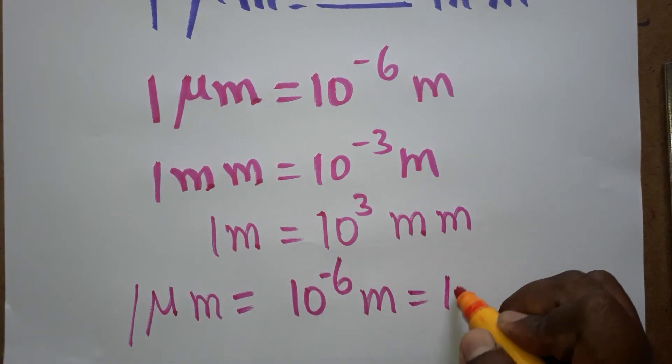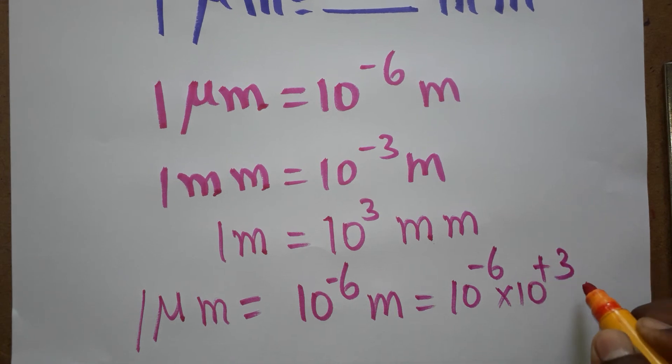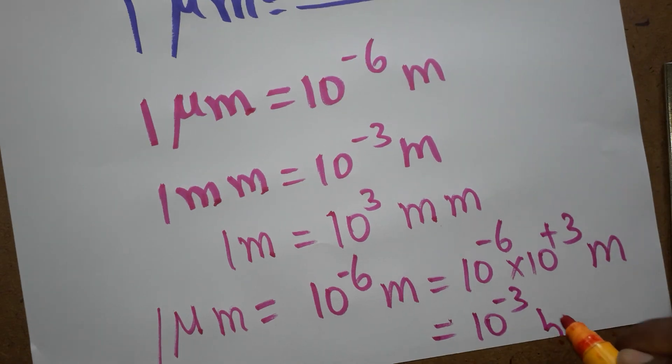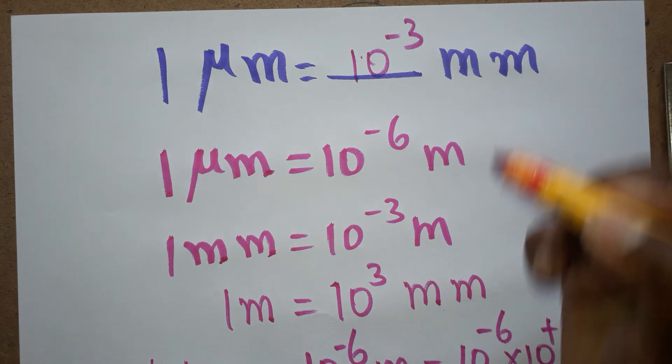So 10^-6 times 10^3. When we multiply these powers, we get 10^-3. Therefore, 1 micrometer equals 10^-3 millimeters.